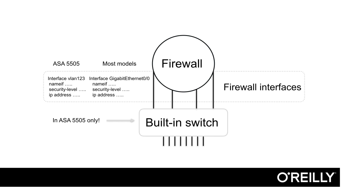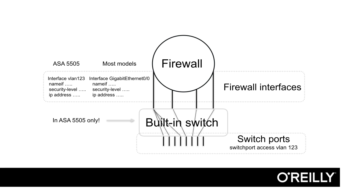So in the 5505, for each firewall interface like inside, outside, and DMZ, we configure a VLAN. For example, interface VLAN 123, name-if inside, security level 100, and so on. Next, interface VLAN 124, name-if outside, and so on. We set the name-if, security level, and IP address on VLAN interfaces in the 5505. On the physical interfaces — the switch ports — we set which VLAN to access. For example, interface GigabitEthernet 0/0, switchport access VLAN 123.